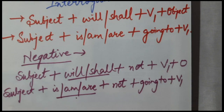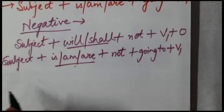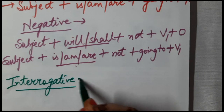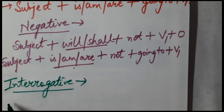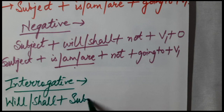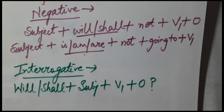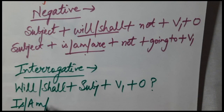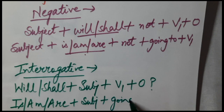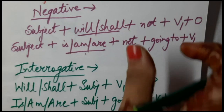Now let us talk about interrogative sentences — how the rule changes when we want to write interrogative sentences. It is very simple. We will bring our helping verb to the starting, then put our subject, then your V1, finally your object, and it ends with a question mark. If you are using the going to form, put your helping verb is, am, or are before the subject, then going to, then your V1 and object.